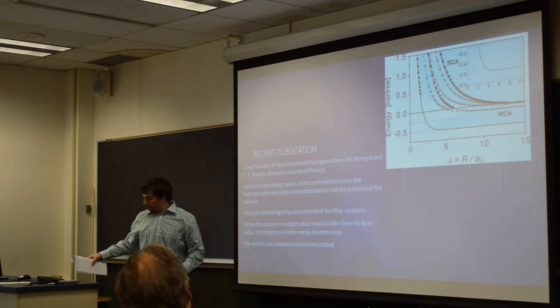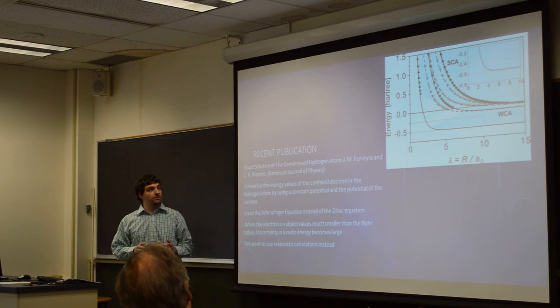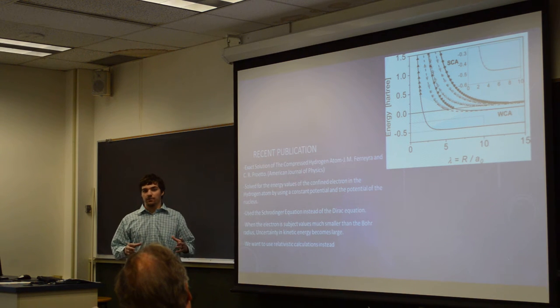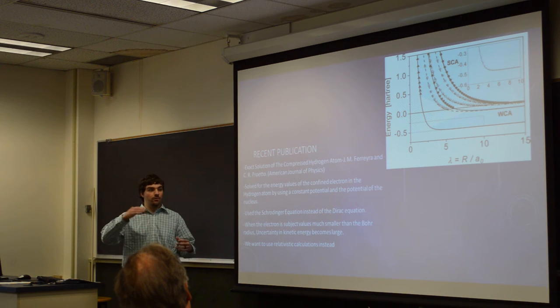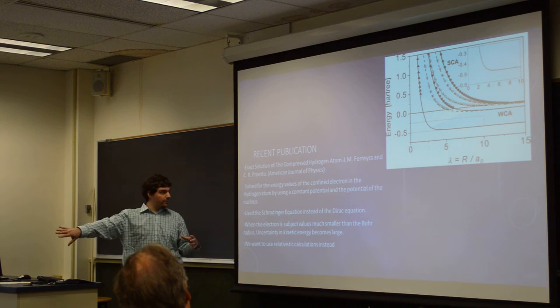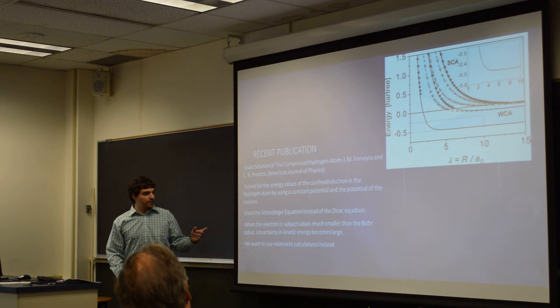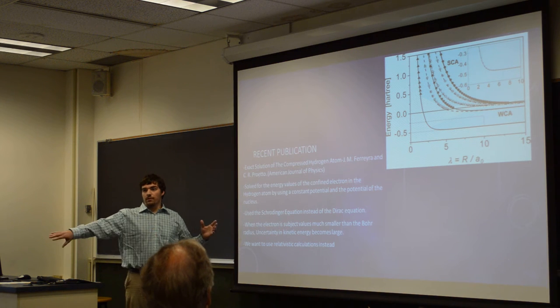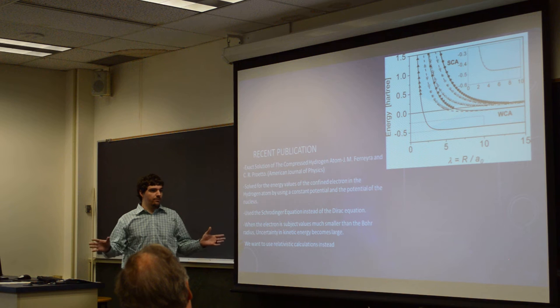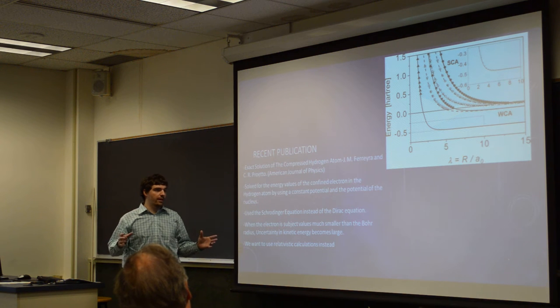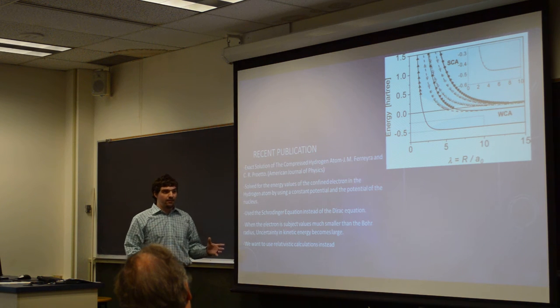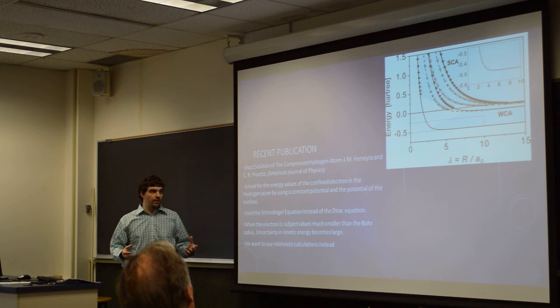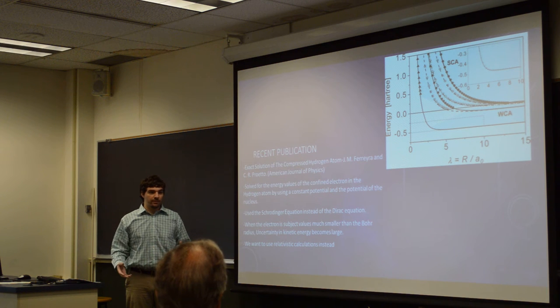What they did was they took a spherically symmetric potential and confined it to different levels of the Bohr radius, like half the Bohr radius, the Bohr radius, even bigger, all the way down to infinity. They used the Schrodinger equation instead of the Dirac equation, which above Bohr radius doesn't really matter that much, but when they went down to half the Bohr radius and even less, you're causing the uncertainty in kinetic energy to be very large.